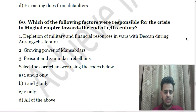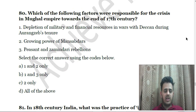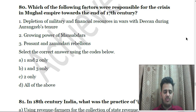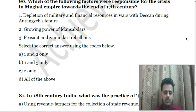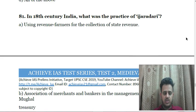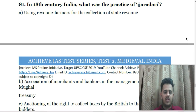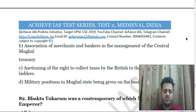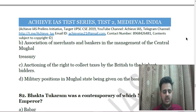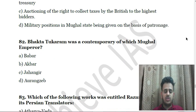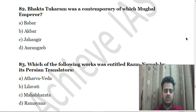Next: The official Amin in Mughal India was responsible for — A. Ensuring that imperial regulations were carried out in the provinces; B. Ensuring external security and diplomatic negotiations for peace; C. Supervising the work of all welfare departments at the center; D. Extracting dues from defaulters. Next: Which of the following factors were responsible for the crisis in the Mughal empire towards the end of the 17th century? First, depletion of military and financial resources in wars with the Deccan during Aurangzeb's tenure; Second, growing power of mansabdars; Third, peasant and zamindari rebellions.